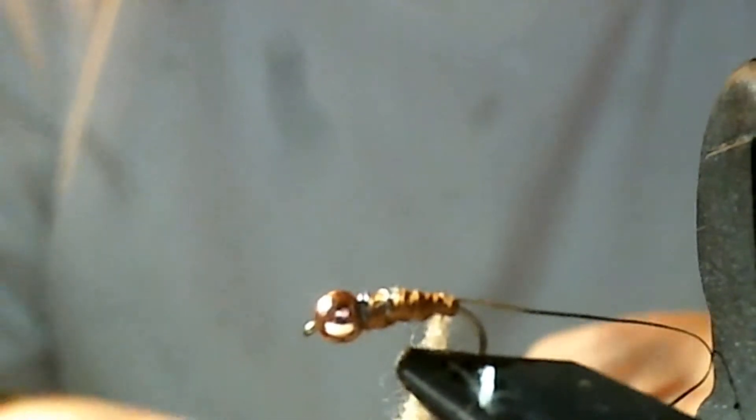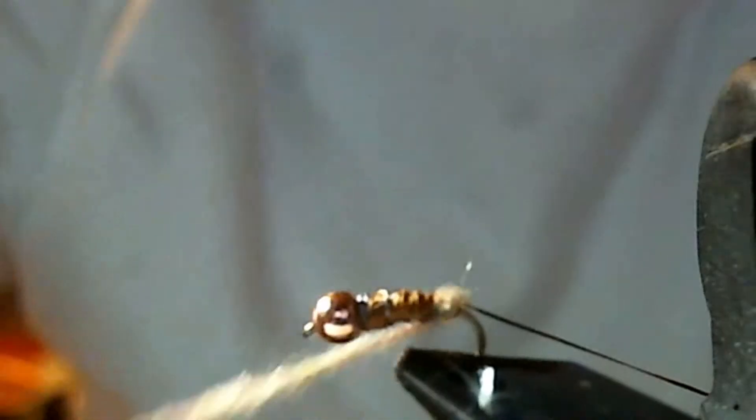If you ever have a fly that you want to see, just leave a comment in this video. I'll cover it. Now, when you wind your dubbing, I like to go back and then dub it back. It makes it stronger fly when you go up and back with the dubbing. Then you take your rib.